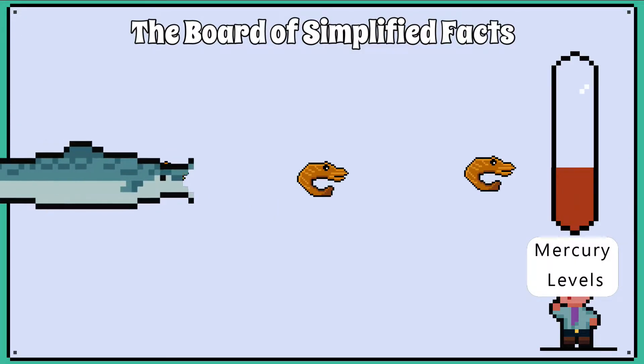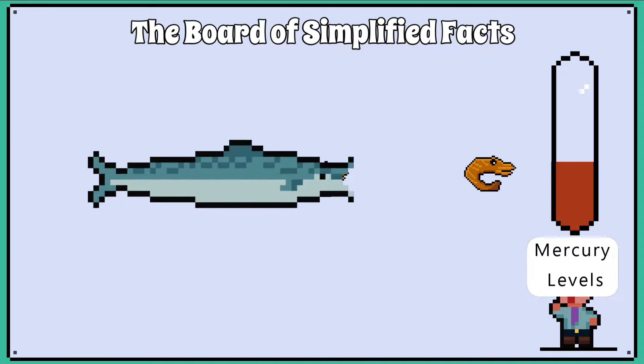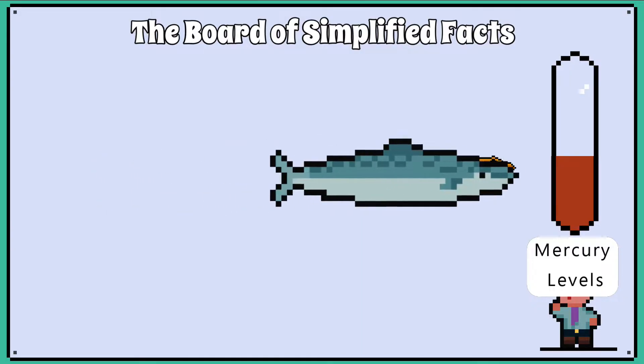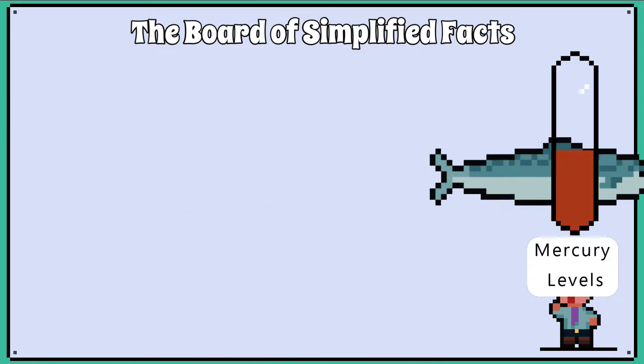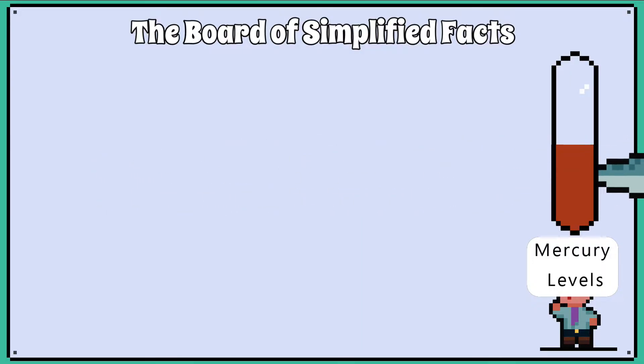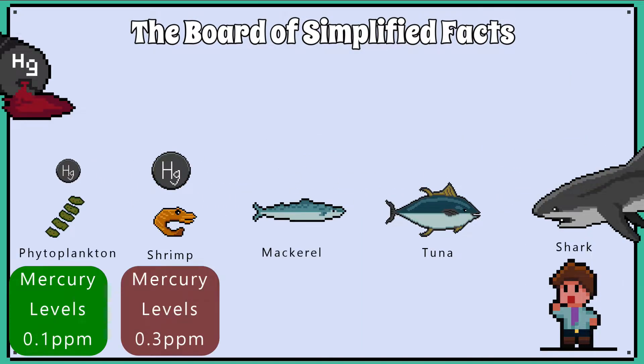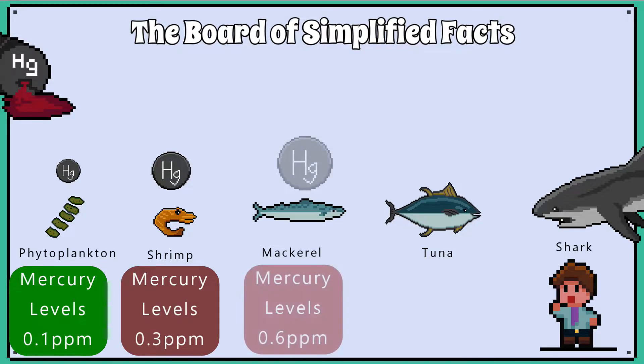Mackerel then eat the shrimp, and again, mackerel rely on eating many shrimps to survive, and the mercury continues to accumulate. Now an individual mackerel contains mercury levels of 0.6 parts per million.